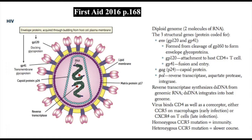The virus binds to CXCR4 and CD4 on T cells, or CCR5 and CD4 on macrophages. Those in the population with homozygous CCR5 mutations are actually immune to HIV infection. If you have a heterozygous CCR5 mutation, you end up with a slower course of the virus.